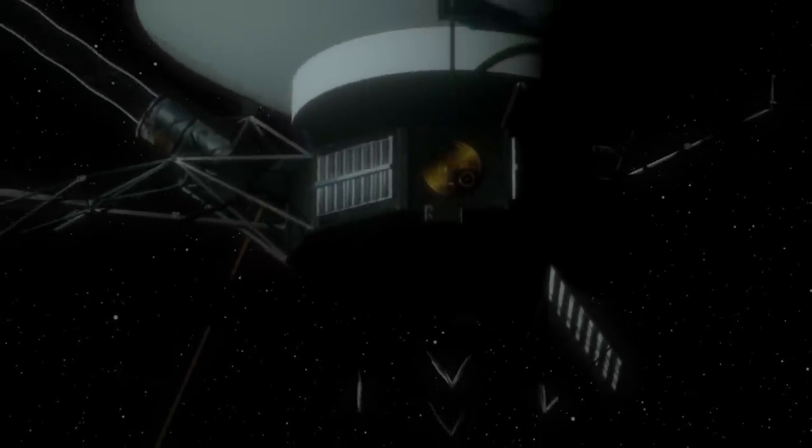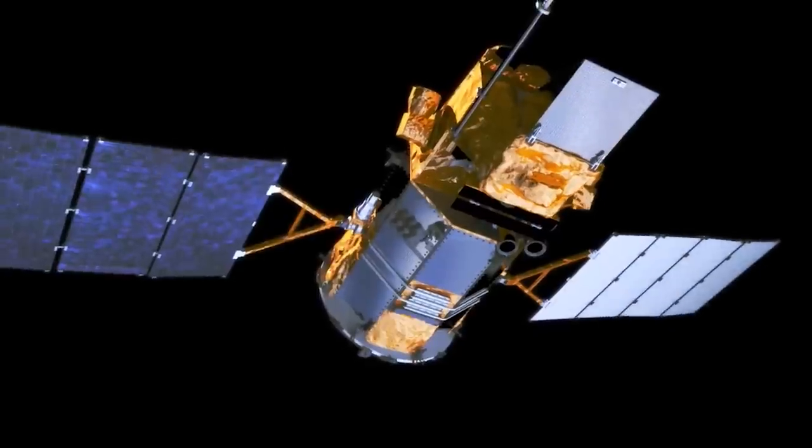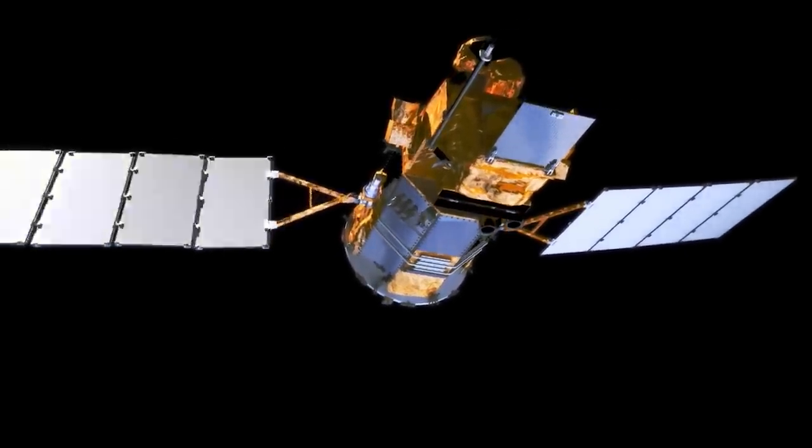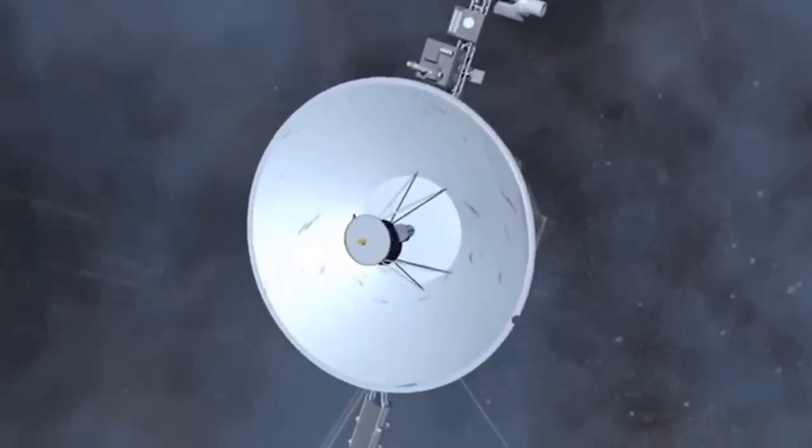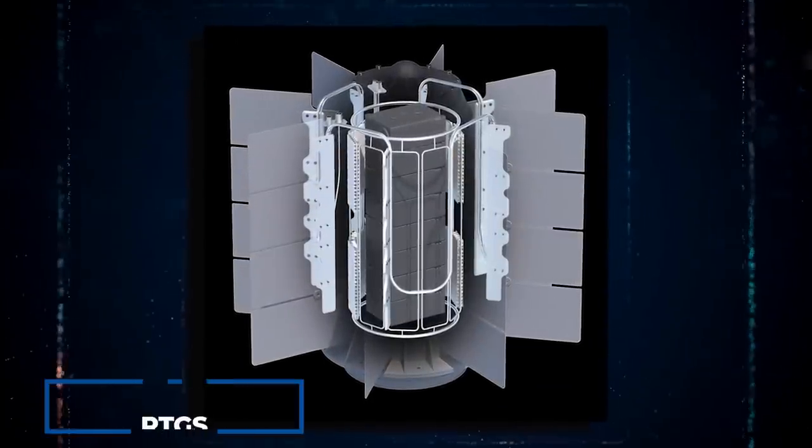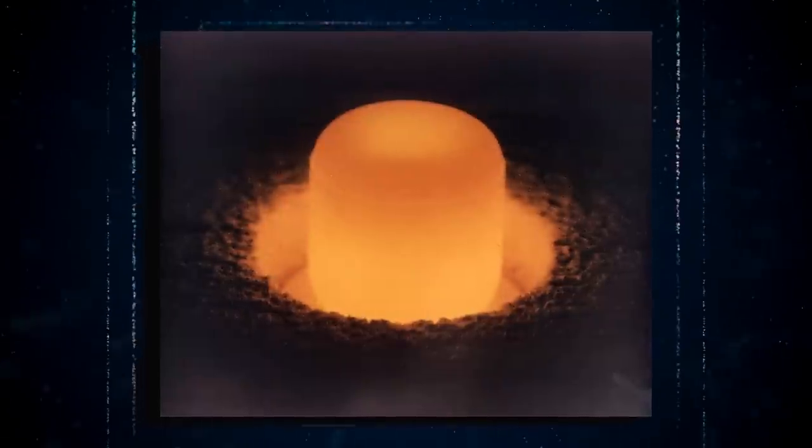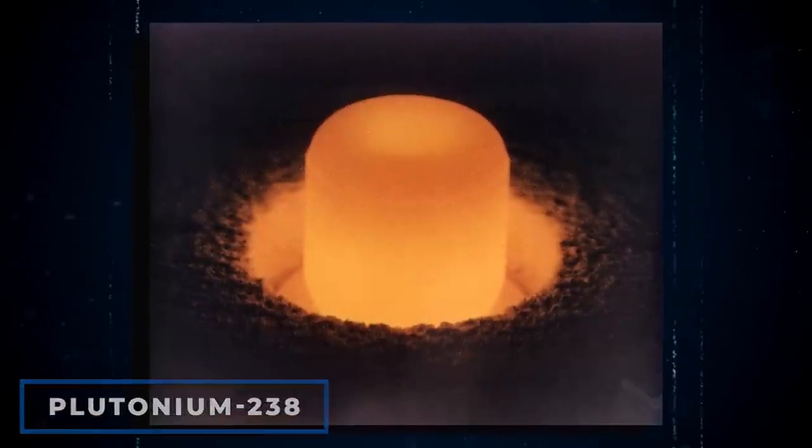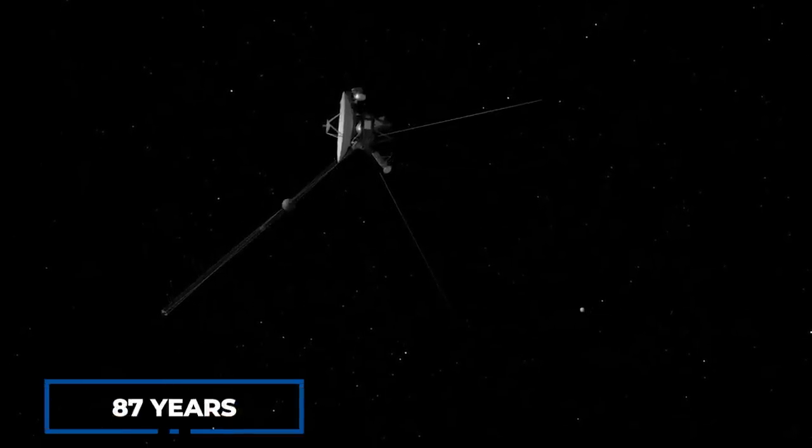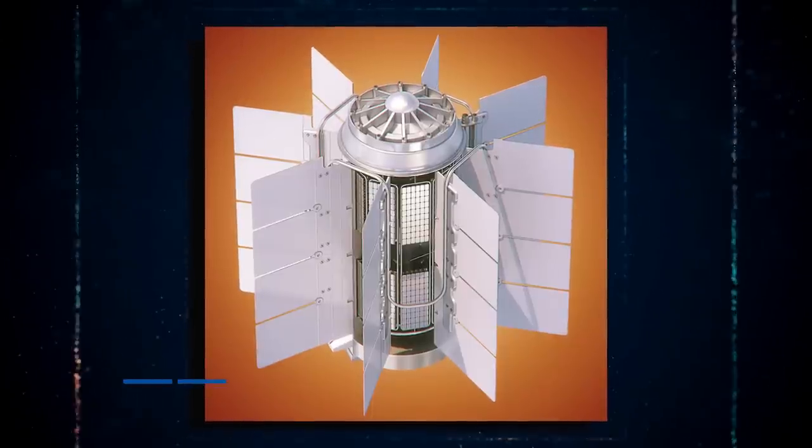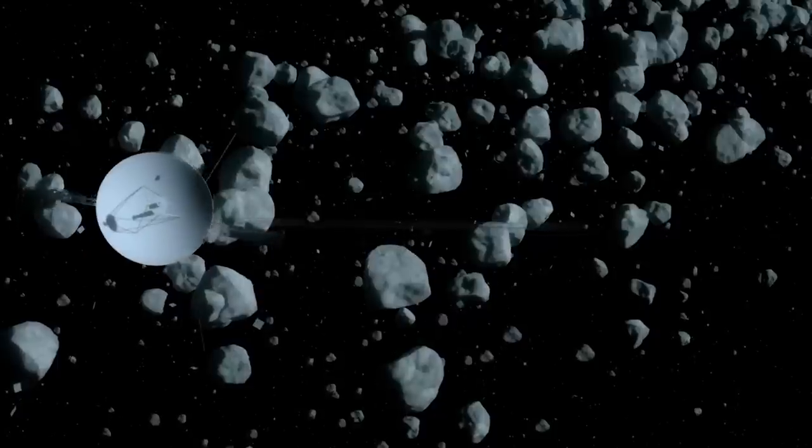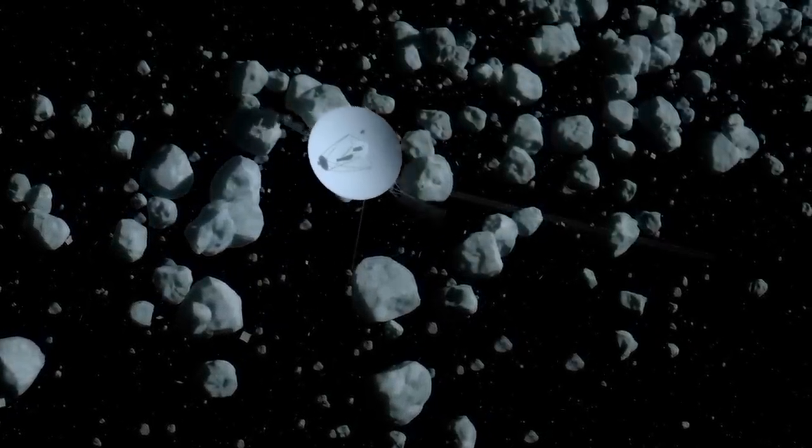However, powering these instruments and systems for decades required a constant supply of energy. While previous space probes relied on solar panels to harness solar energy, Voyager 1 was designed with a different power source. NASA engineers anticipated that Voyager 1 would eventually venture beyond the range of sunlight, and thus built the probe with three radioisotope thermoelectric generators, or RTGs. These generators contained 24 pressurized spheres of plutonium-238, a stellar fuel choice due to its half-life of 87 years. At the start of its journey, Voyager 1's RTGs generated about 470 watts of electricity, a number that has decreased by nearly 50% over the course of the probe's 45-year journey.